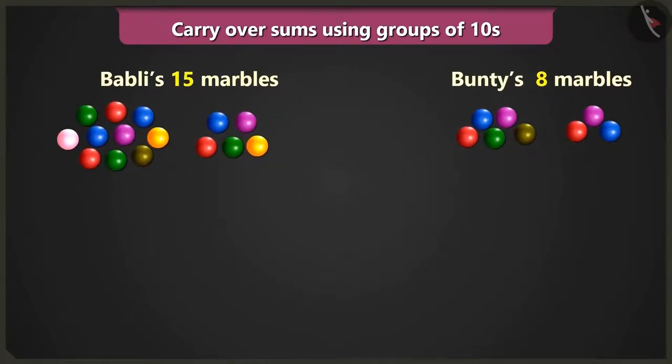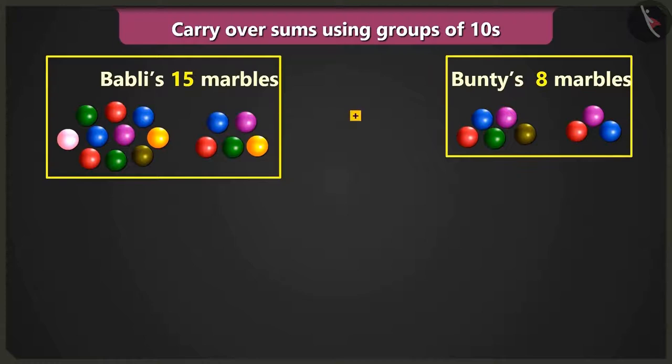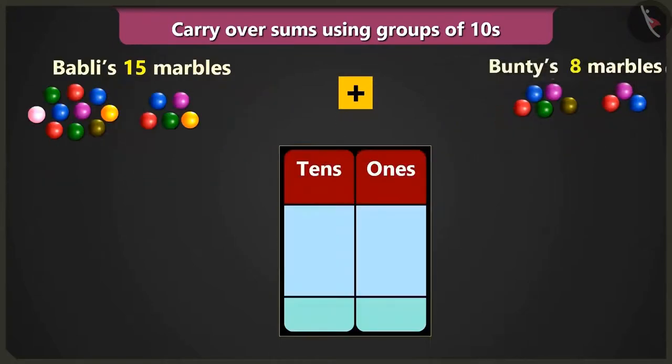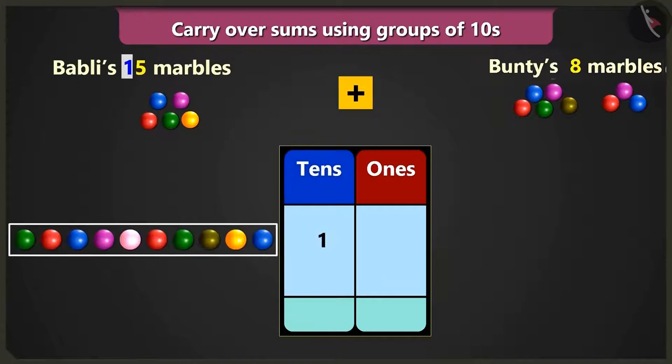Come on, let's add 15 and 8. I have 1 tens and 5 ones. You have 15 marbles. So we will write 1 in the box of tens and 5 in the box of ones.